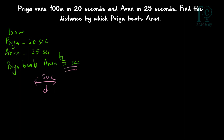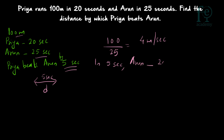So how much distance is Arun running in 5 seconds? It is already given that in order to cover 100 meters, Arun is taking 25 seconds. So the speed of Arun will be equal to 100 divided by 25, which is 4 meters per second. In 5 seconds, Arun will be running 5 into 4, which gives us 20 meters.